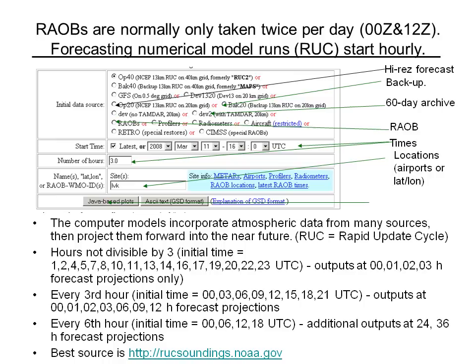One is also able to get observations. Rawinsonde observations, shown as the sixth one down, are the balloon observations obtained by sending up weather balloons that telemeter down temperature, dew point, and location from which they get wind. These are sent up every 12 hours at 00 and 1200 Zulu. Those are good if it happens to be 00 or 1200 Zulu, but if it's somewhere in between, the forecast will give you more timely information.